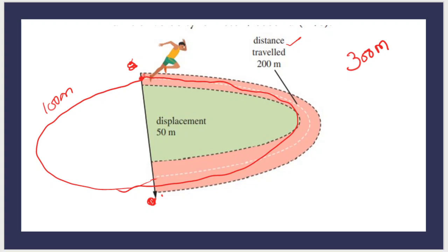In this case, he covered a distance of 300 meters. What is his displacement? The starting and ending points are the same position. Since the object starts and ends at the same point, the shortest distance is zero — therefore the displacement is 0 meters.